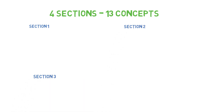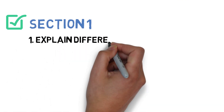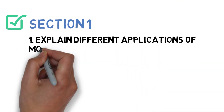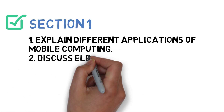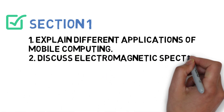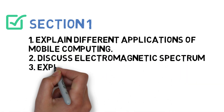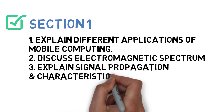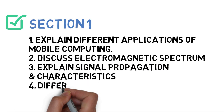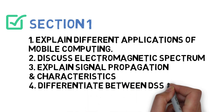For section one, we'll be doing four questions. First is the applications of mobile computing, second is electromagnetic spectrum, third is signal propagation and characteristics, and fourth is differentiate between DSSS and FHSS. You guys need to finish these four questions for section one.